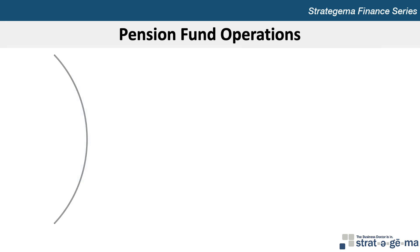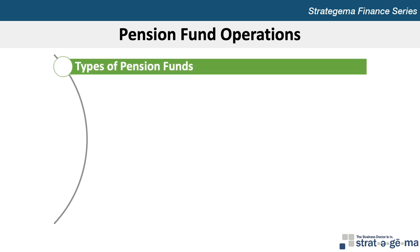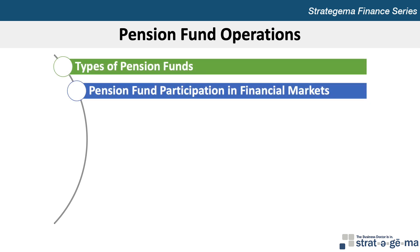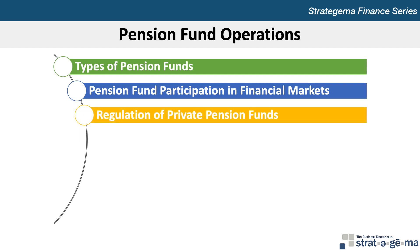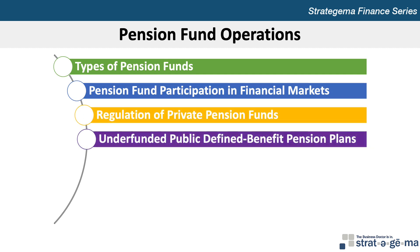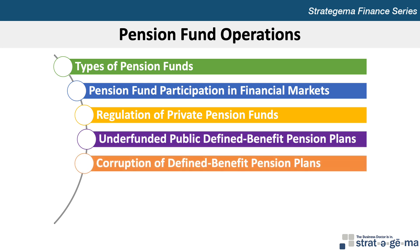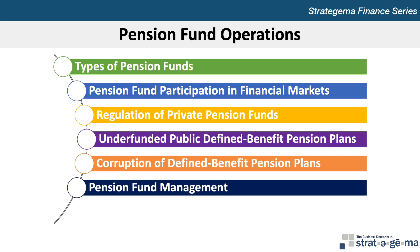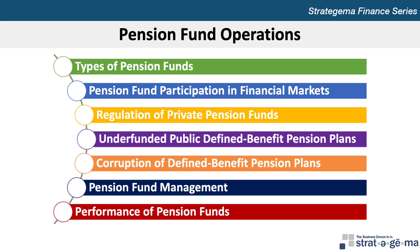Chapter 26 includes seven learning objectives. First, to distinguish between defined benefit versus defined contribution pension plans. Second, to explain how pension funds participate in financial markets. Third, to discuss the regulation of private pension plans. Fourth, to discuss underfunding of public pension plans. Fifth, to discuss corruption and defined benefit plans. Sixth, to explain how pension funds are managed. And the last learning objective is to explain the key factors that influence the performance of pension portfolios.